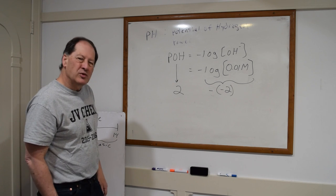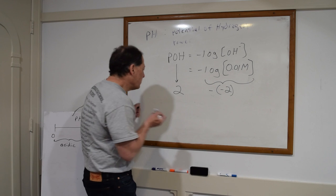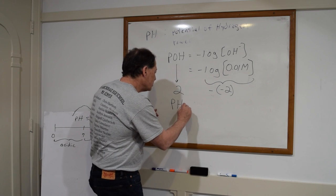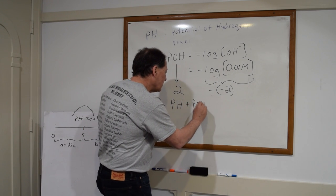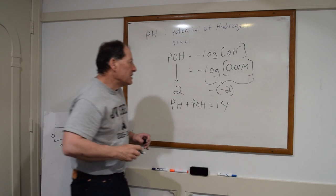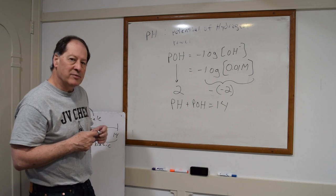Now, what's the relationship between those two things? Very simple. The pH of a solution plus the pOH of a solution is equal to 14. The pH and the pOH always have to add up to 14.